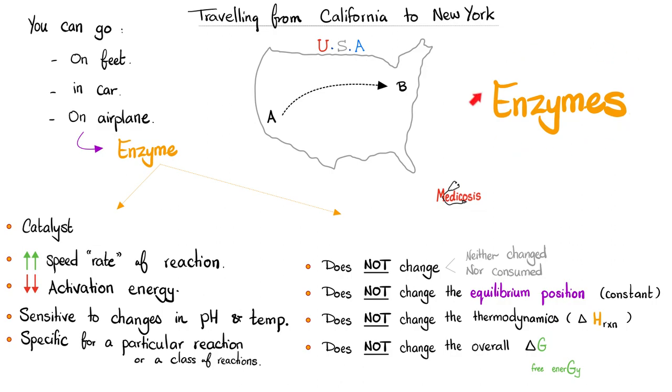Now, to today's topic: enzymes. The best way to understand enzymes is to imagine that you want to travel from California to New York. You can do this on feet, on a bicycle, in a car, or an airplane. The airplane is the quintessential enzyme. Why is that? Because it speeds up the reaction. You'll go there faster.